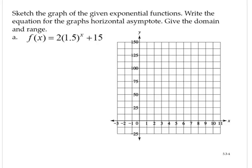We're given f of x is equal to 2 times 1.5 to the x plus 15. Now, if we forget about the plus 15, we already know a lot about this. We know that it would be above the x-axis. So this part tells us it's above the x-axis and increasing.